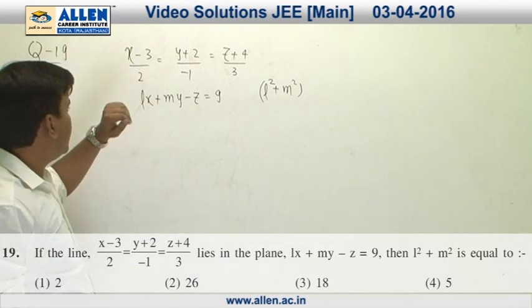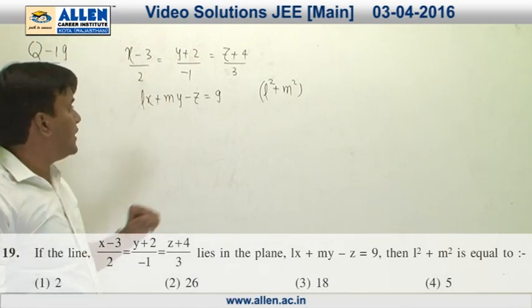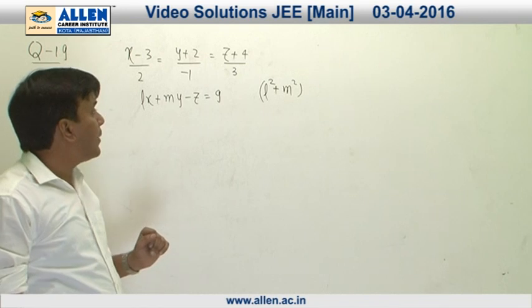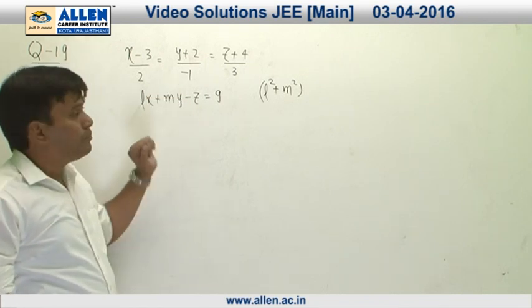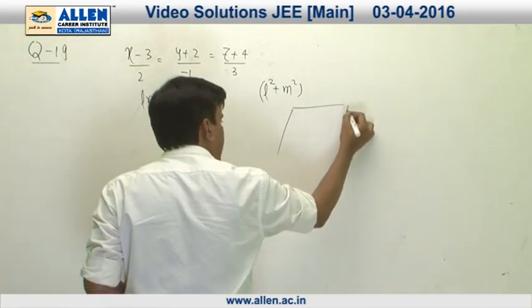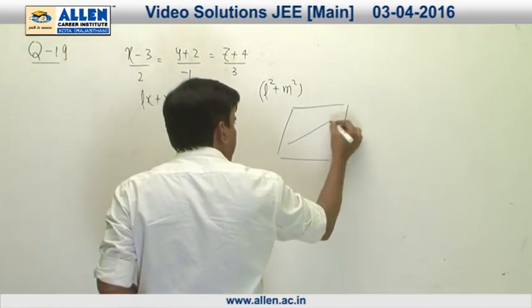In question number 19, this is a straight line in 3D space and this is an equation of a plane. It is given in this question that this line lies on this plane.